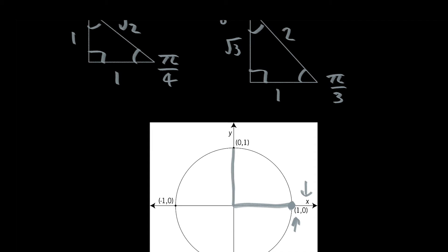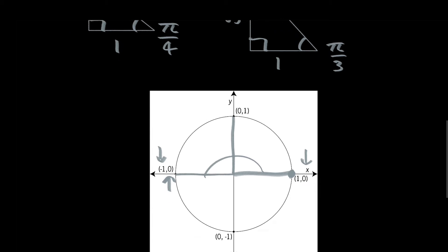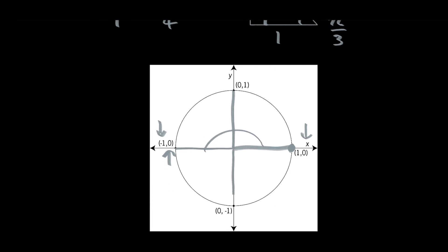Similarly for pi over two: the cosine of pi over two is zero and the sine of pi over two is one. For pi, the cosine of pi is negative one and the sine of pi is zero. For three pi over two, the cosine of three pi over two is zero and the sine of three pi over two is negative one.